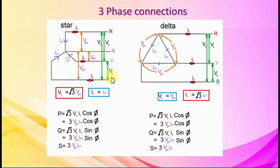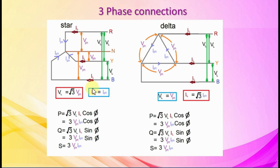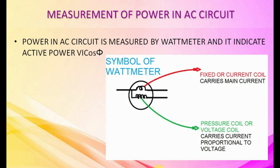Three-phase connections: star and delta. R, Y, B are three lines. Line voltage VL is voltage between two lines; phase voltage VPH is voltage between each branch. Line current IL is current through each line; phase current IPH is current through each branch. In star connection, line current equals phase current, and line voltage equals root 3 times phase voltage. In delta connection, line voltage equals phase voltage, and line current equals root 3 times phase current. Power is measured by watt meter, indicating active power V I cos phi.